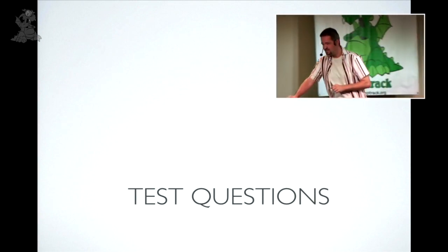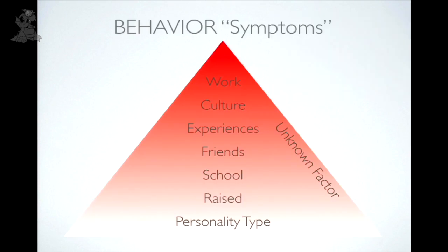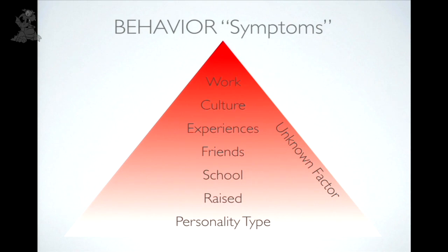Third problem: test questions measure symptoms — behaviors and what you do — which are filtered through all those contextual layers already discussed. This creates cross-cultural problems: research is mostly conducted on American college students. Questions validated for extroversion/introversion in the US don't translate cleanly to Japan or Brazil. Science shows those countries have the same ratio of extroversion to introversion as elsewhere — but the behavioral expressions look completely different to an outside observer.